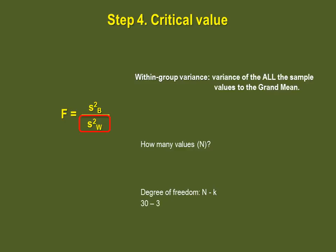So because we have 3 samples with 10 values each, in total we have 30 values minus 3, our number of samples. Our degree of freedom is 27.